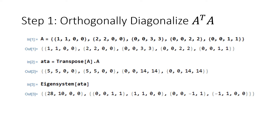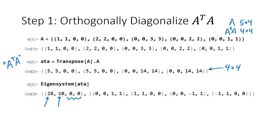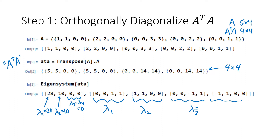Here's what this looks like for our matrix A. First, I type in matrix A, then define A transpose A, which I call ATA. We find the eigensystem for ATA. Since A is five by four, ATA is four by four and has four eigenvalues counting multiplicity. We get lambda one equals 28, lambda two equals 10, and lambda three equals lambda four equals zero. The eigenvectors are: one going with lambda one, one with lambda two, and two eigenvectors both going with lambda three and lambda four.